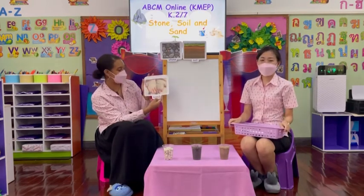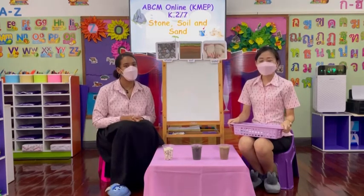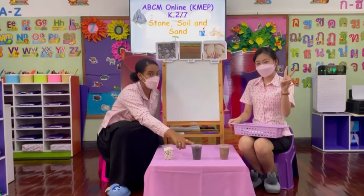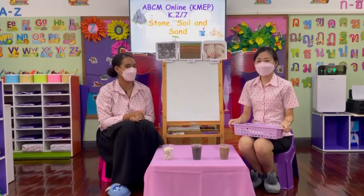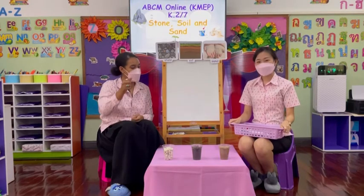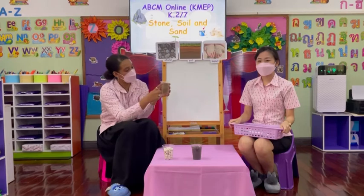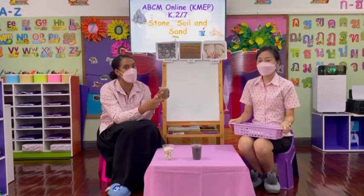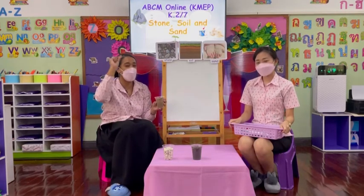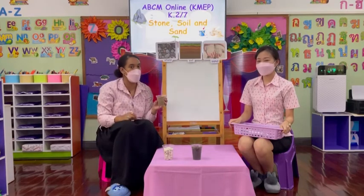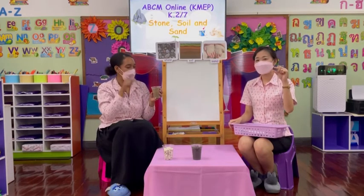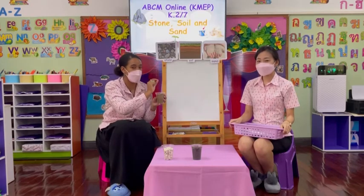Sand! Good job! Can you see which one of our cups contains sand? Is it number one, two, or three? Good job — it is cup number three. Here we have our sand. The sand is a light brown, and sometimes yellow, colour. Inside our sand the grains are the smallest of the three. So we have stones which are big, soil which is small, and sand which is the smallest of them all.